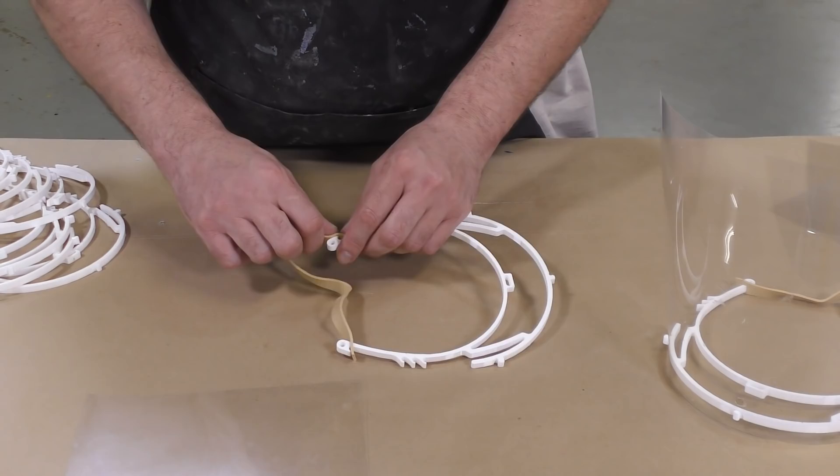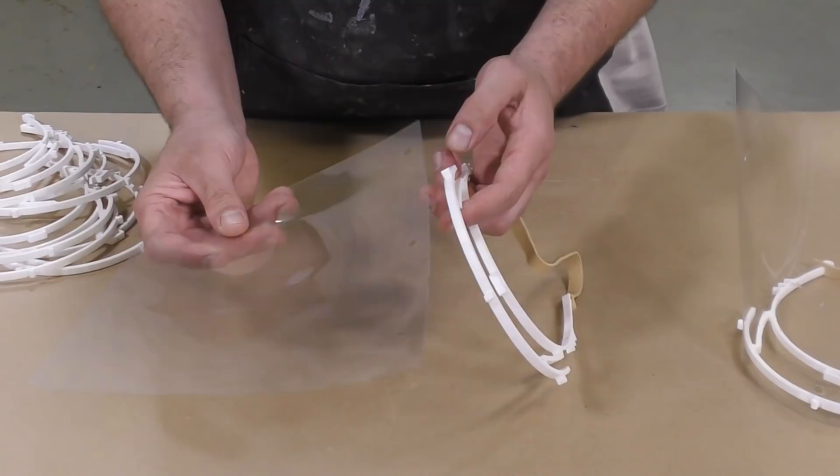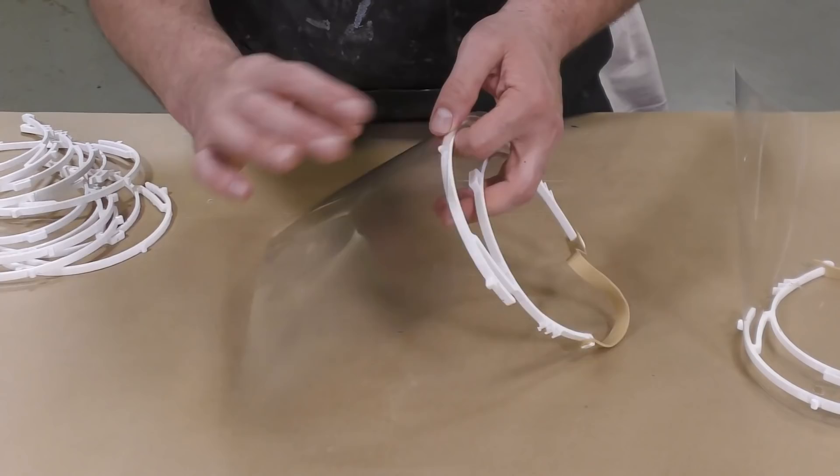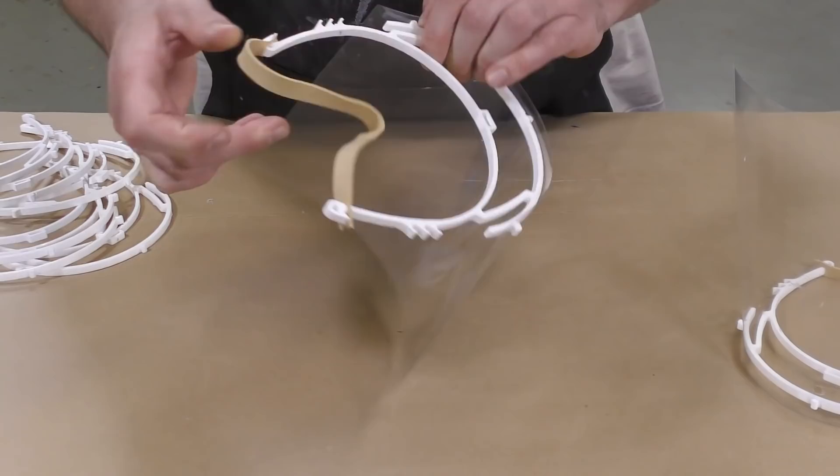Then the entire frame can get assembled. Here goes our rubber band in the back to hold the shield on the head itself. Then we can simply put that plastic shield onto the frame. These are really easy to put on and take off, so you can actually replace them quite easily and quite fast.